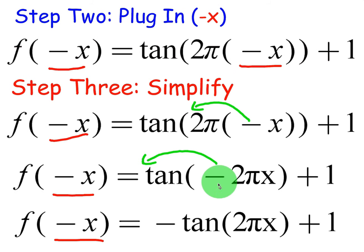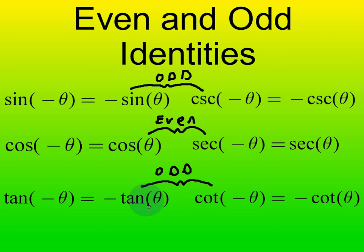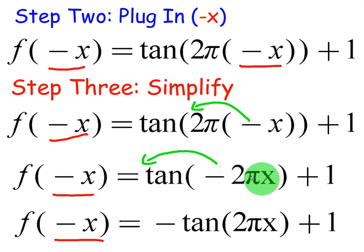Tangent is an odd function meaning tangent of negative theta is equal to negative tangent of theta. So in this particular case, tangent of negative 2 pi x, we can pull the negative out is equal to negative tangent of 2 pi x. Now notice it did nothing to the plus 1. So we've just proven that f of negative x is equal to negative tangent of 2 pi x plus 1 by basically pulling the negative out for commutative property and the negative out because tangent is an odd function.